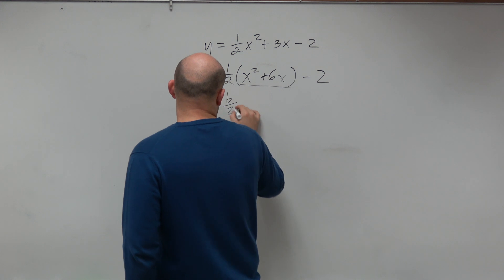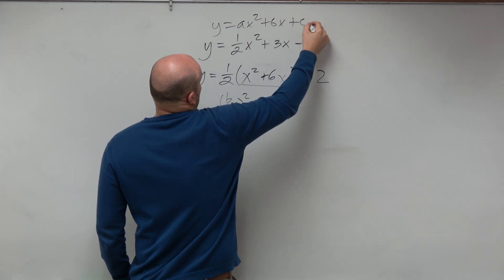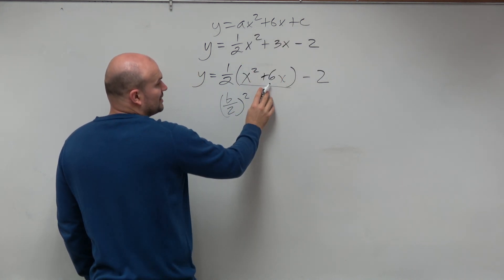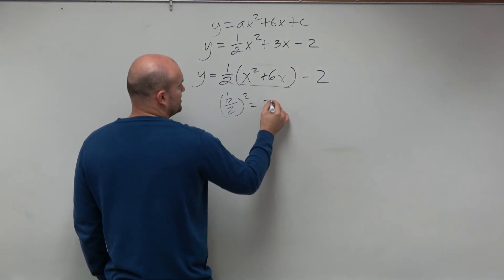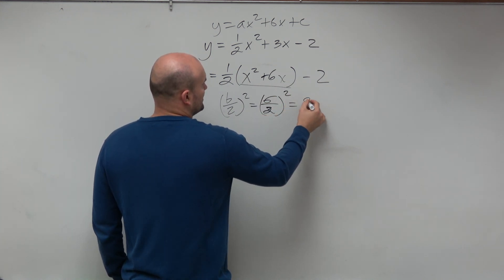So I'm going to take my b divided by 2 and square. Remember, b comes from the standard form. However, we don't want to use this b. We want to use the b once it's been factored out. So therefore, it's going to be 6 divided by 2 squared, which equals 9.